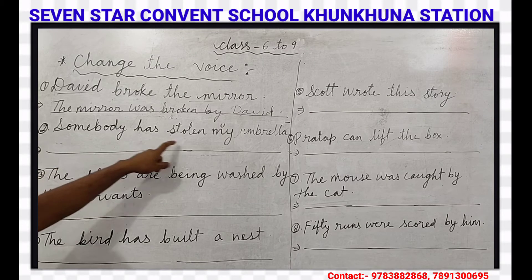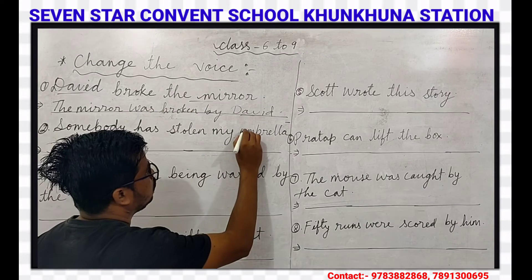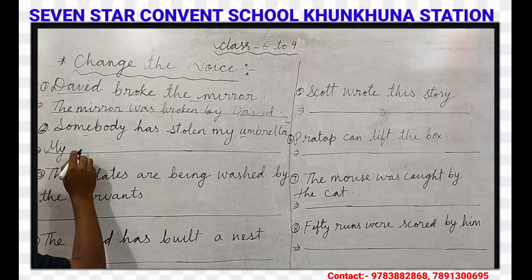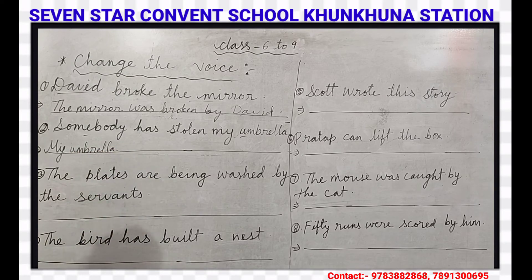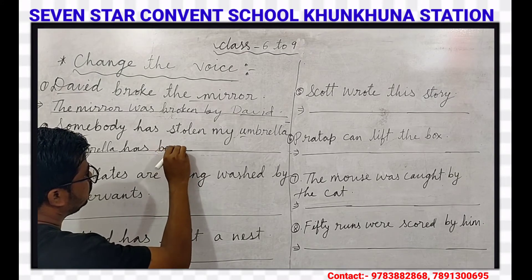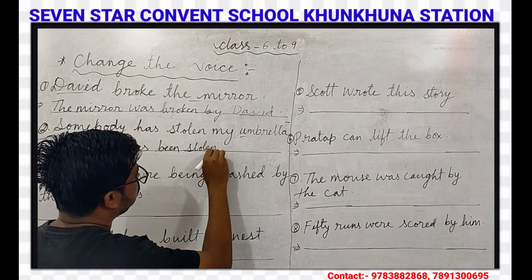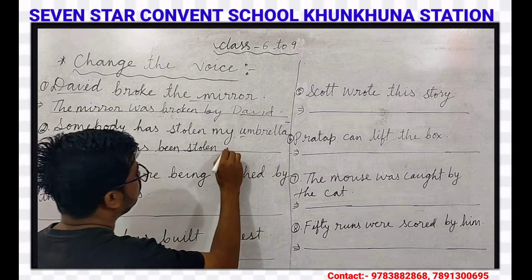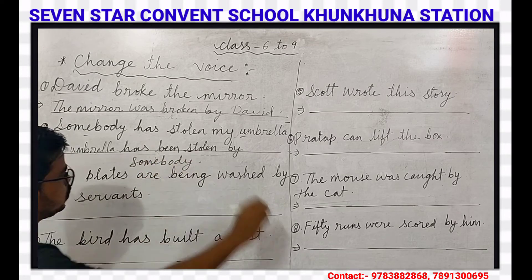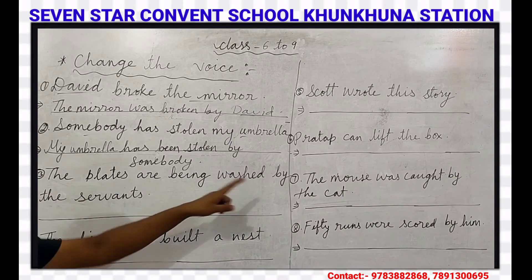Our next question is: Somebody has stolen my umbrella. This is active voice and it is in present perfect tense. Here somebody is the subject and my umbrella is the object. My umbrella will come at the beginning of the sentence in passive voice. My umbrella is singular, so 'has' will come here. 'Been' is added in perfect tense. My umbrella has been stolen by somebody.